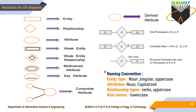Along with this, there are naming conventions. If you want to give the name for an entity type, it must be a noun, singular, and specified in uppercase. For attribute names, they must be capitalized — the starting letter must be capital. For relationship types, names must be verbs and in uppercase. Role names are in lowercase.